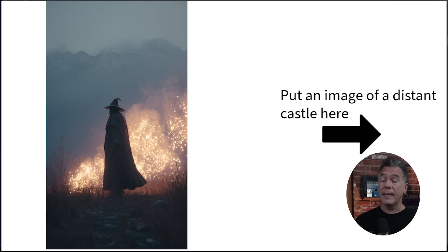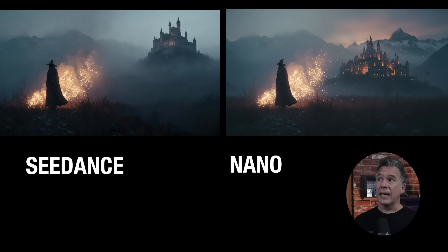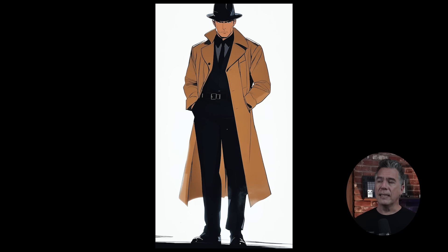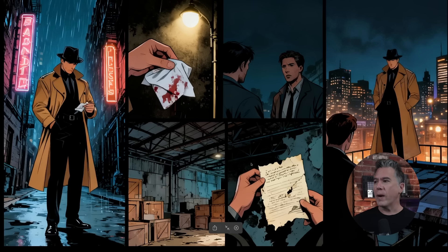It also does a pretty good job following on-screen directions. As we took a look at in the Nano Banana video, where I just said 'place a distant castle here,' Seedream came back with something that looks really pretty good. Honestly, for my personal taste, I think at least from an aesthetic standpoint this looks better than the Nano Banana output. I was also curious to see how creative the model could be, so I gave it a character and told it to generate comic book panels of a noir detective looking for clues in a crime city. It came back with something pretty cool. Does this make sense from a linear narrative perspective? No — but it does show the model understood the assignment, with things like a bloody handkerchief, a grimy warehouse, a scribbled note.